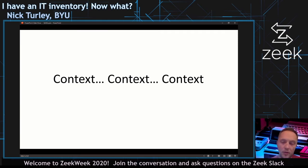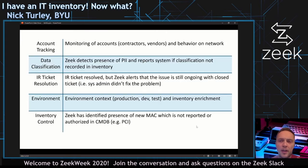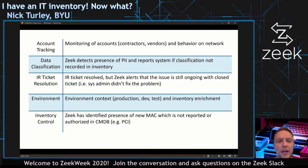Let's go through some use cases. Account tracking: what if you wanted to monitor contractor and vendor accounts and behavior on your network — you can feed that data into Zeek. Data classifications: where is your PII stored — social security numbers, medical records? You can get Zeek to detect the presence of PII and report systems that aren't included in your inventory. You've got a new highly confidential system that needs to be recorded and dealt with via IR ticket resolution.